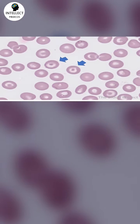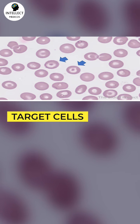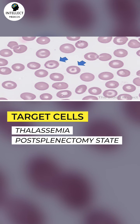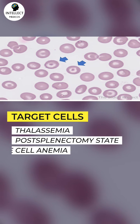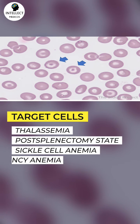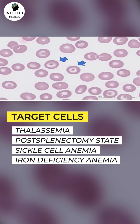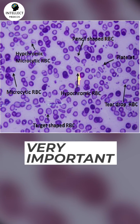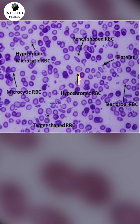The third slide shows target cells, which are commonly seen in thalassemia and post-splenectomy state. They can also be present in sickle cell anemia and iron deficiency anemia.